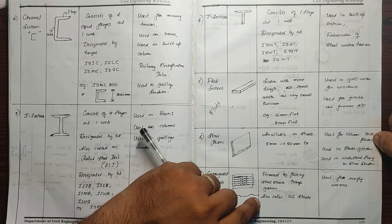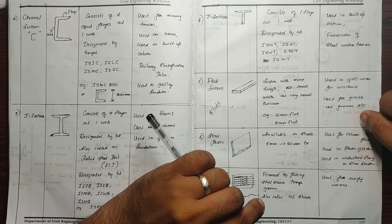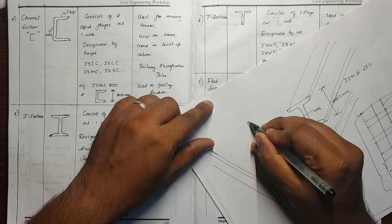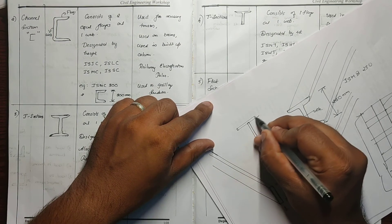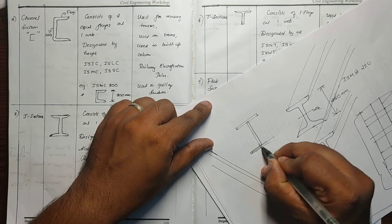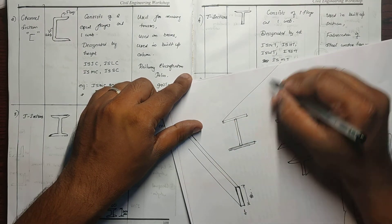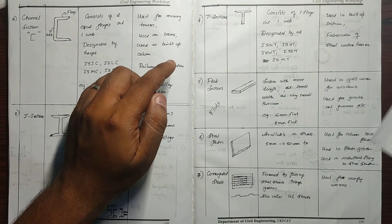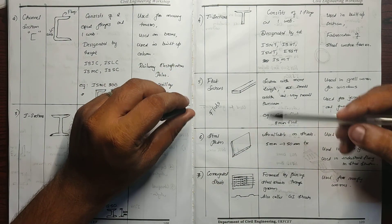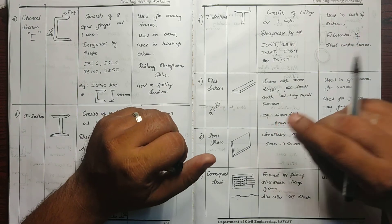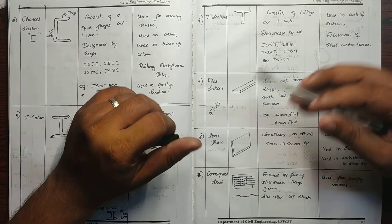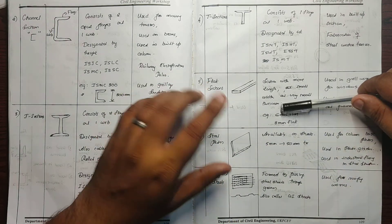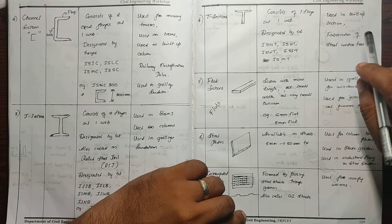Steel plates can be cut using a plate cutter. You can use I-sections with the same thickness for steel plates. Flat plates can be placed in the right direction. This includes Corrugated Steel Plates — roofing sheets formed by passing steel sheets through grooves.